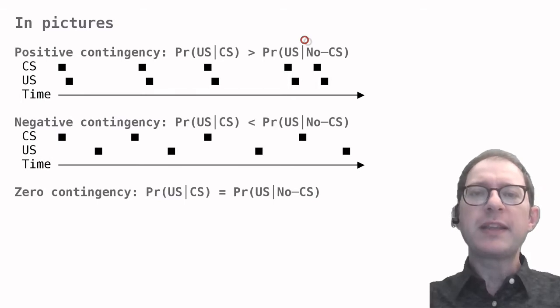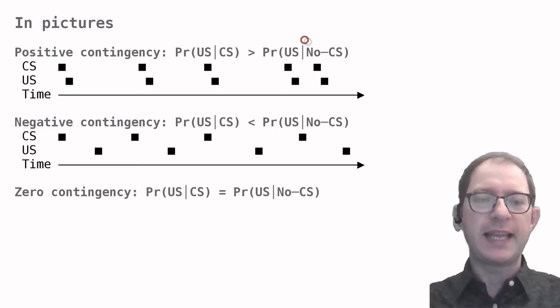Let's now look at the case of so-called negative contingency. In a negative contingency, the US is more likely to occur without the CS than with it. This example shows a very strong negative contingency such that when we see the CS we are sure that the US will not occur for some time.